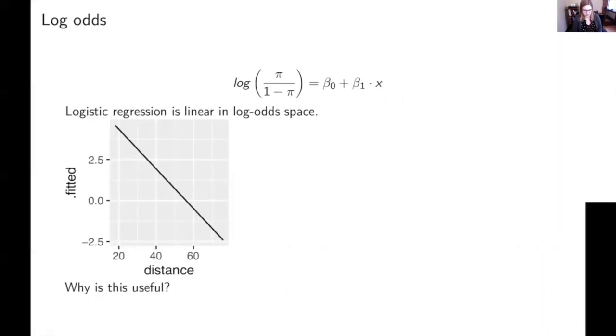So I'm gonna start with the log odds space. This is the logit. And the log odds are the log of pi over one minus pi. That's the odds. And logistic regression is linear in log odds space. So I have this graph and this is using that football data. So this is the log odds of making a field goal. And then we've got the distance. So we've got a linear version and it's got the same kind of equation that we've seen for linear regression before. So this is useful.